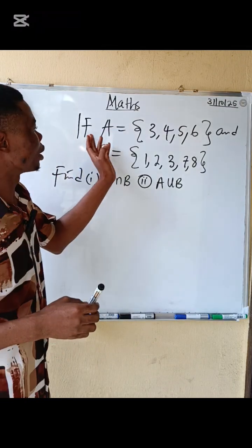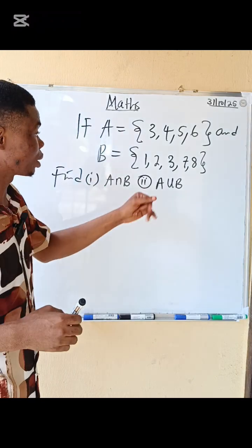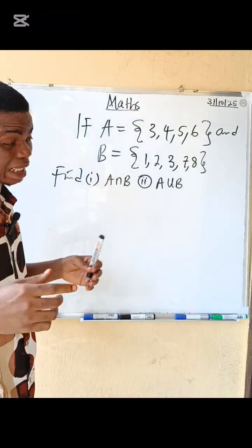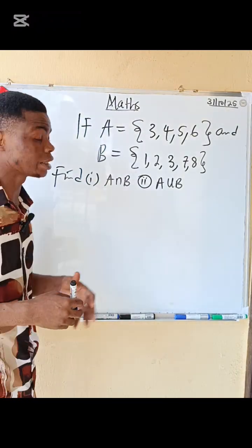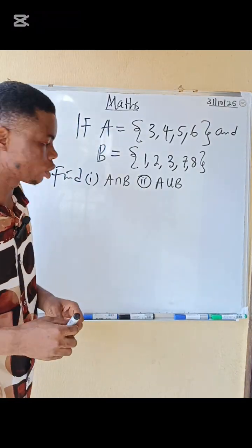We have that A contains an element of 3, 4, 5, 6, and B contains an element of 2, 3, 4, 7, 8. I asked to find A intersection B and A union B. What do you do?